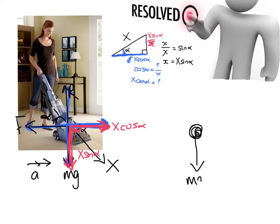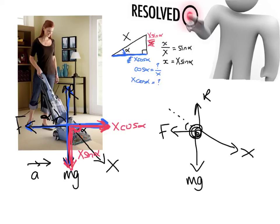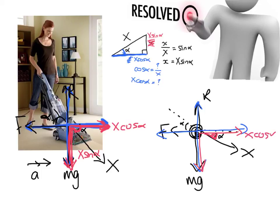Overall, this is what our force diagram is going to look like: we draw the particle, we've got the weight going down, the friction from the carpet, the normal reaction, and the force x. We know that the angle here is alpha, and therefore this angle here is also alpha. If we put our blue axes on top, three of our forces are fine — R, F, and mg — but we need to resolve x. We resolve it into the two parts of the blue axes surrounding x: the one next to the angle will be x cos alpha and the other will be x sin alpha. Now we are fully resolved.